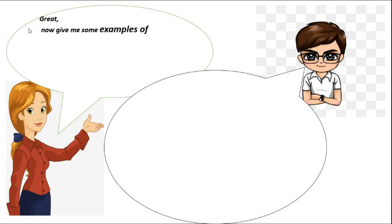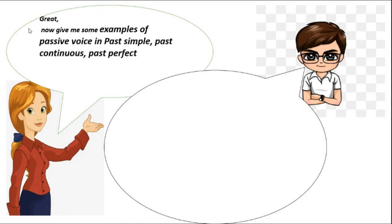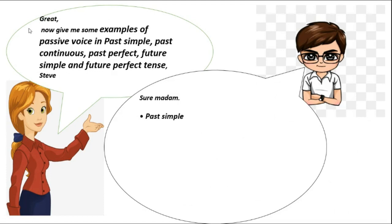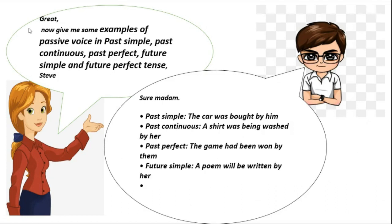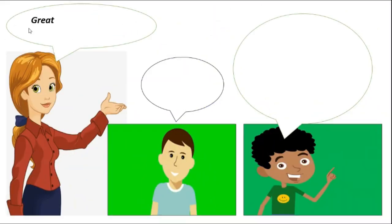Now, give me some examples of passive voice in past simple, past continuous, past perfect, future simple and future perfect tense, Steve. Dear madam, the car was bought by him. A shirt was being washed by her. The game had been won by them. A poem will be written by her. The letter will have been received by them. Great. You people are catching up quickly. Thanks, madam.